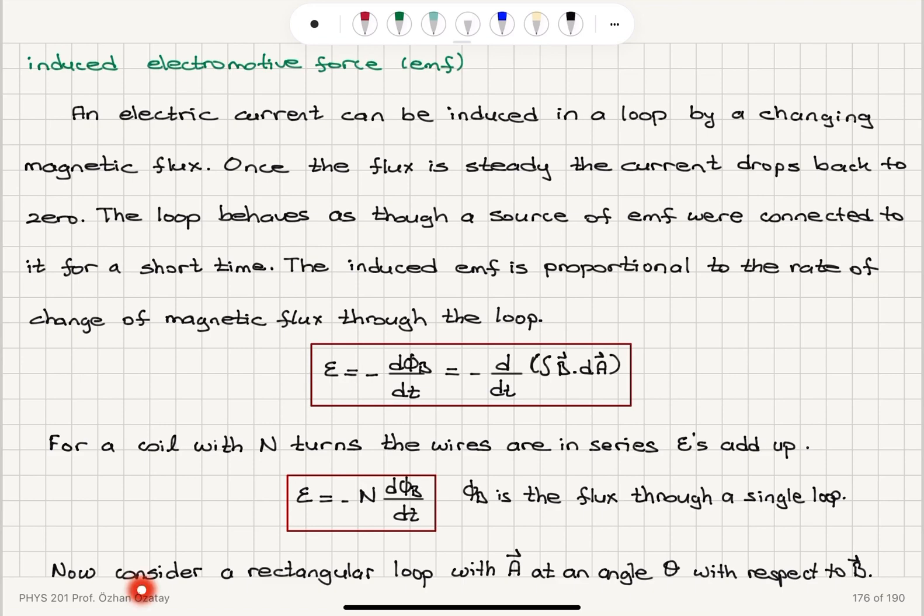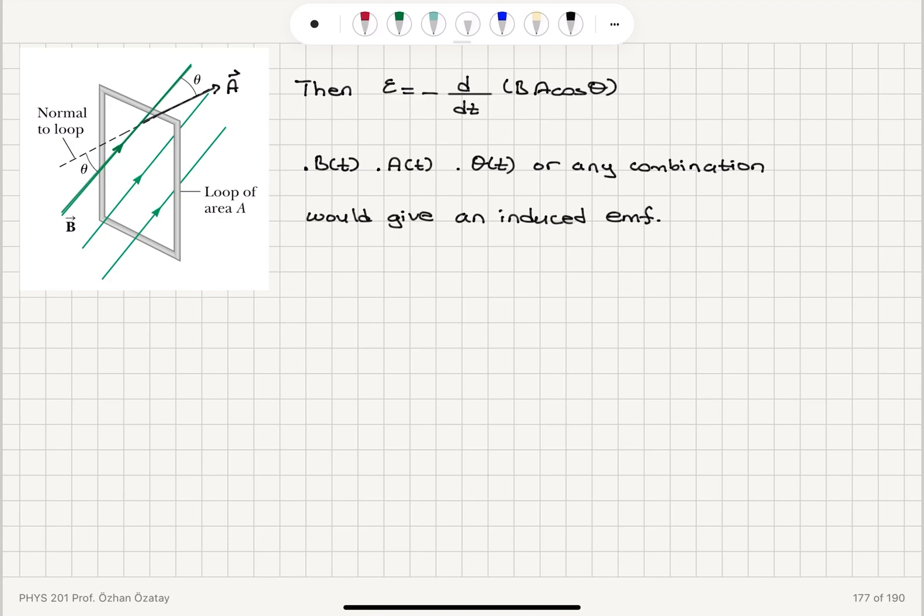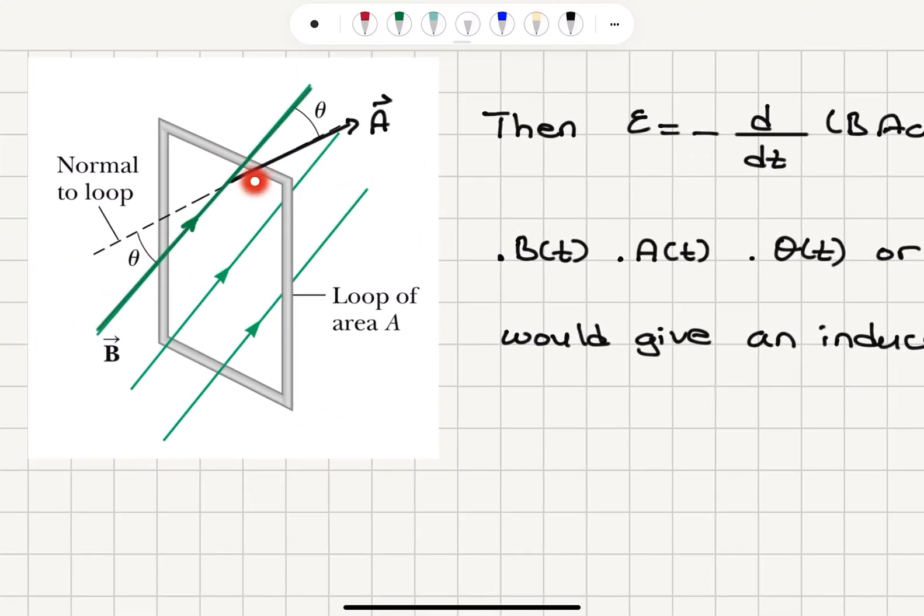Let's now consider a rectangular loop with area vector A at an angle theta with respect to the magnetic field. This is our rectangular loop, which is made of a conducting wire. We have the magnetic field making an angle theta with respect to the normal to the loop, which is the area vector.